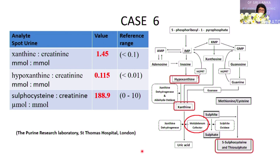The take-home message: when you do certain tests and get unexpected results, don't think it is wrong — you are correct, if you have done the analysis properly with QC run and QC calibration. These results indicate some underlying disorder in a neonate, infant, or even an adult. There are adult rare diseases too — don't forget about it.